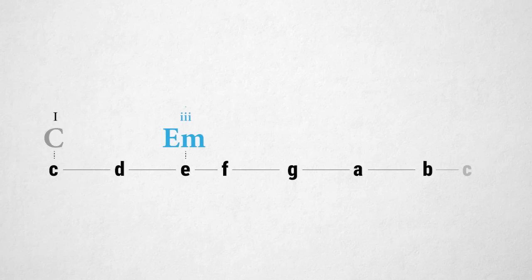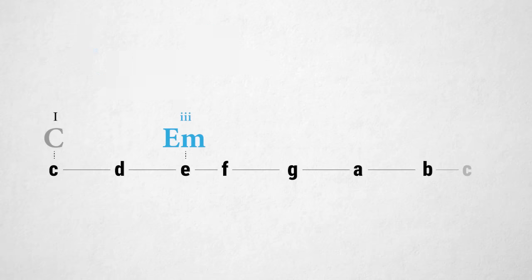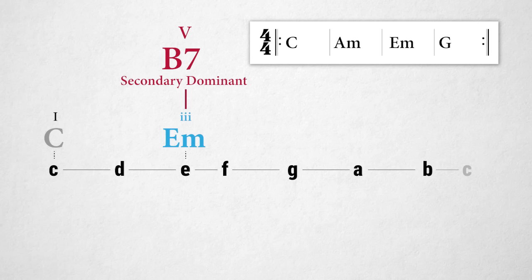The third degree in C major is the E minor chord. In the E minor scale, the fifth degree is the note B, making B dominant seventh the primary dominant for E minor. But when E minor is not the tonic — like in C major — then B dominant seventh is the secondary dominant for E minor. Instead of playing C, A minor, E minor, G, we use B dominant seven as a secondary dominant and play C, B dominant seven, E minor, G. In C major, B dominant seventh is the five of three.